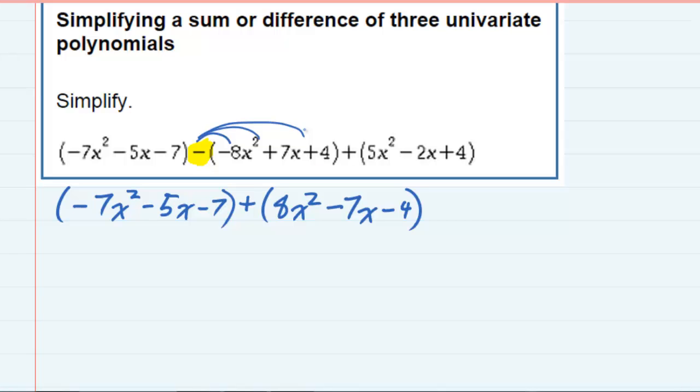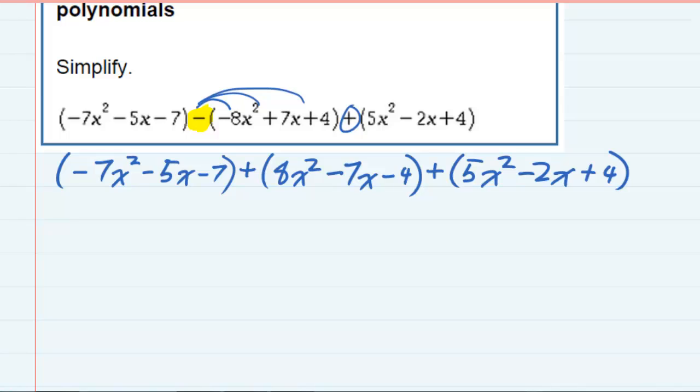And then the last term, it's addition and that's okay. So I'm just going to rewrite it as well. Five x squared minus two x plus four. So we changed the subtraction to addition so that we can now combine like terms.